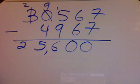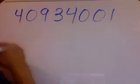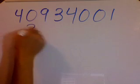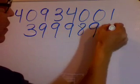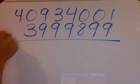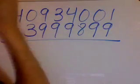Let's have another number: 40934001. Let's start over here with a small number: 9999899. Okay, I just want to make sure that the number at the top is larger than the number at the bottom.